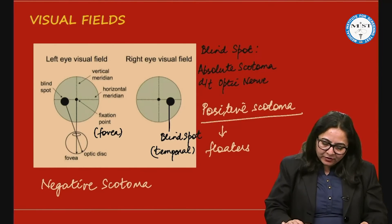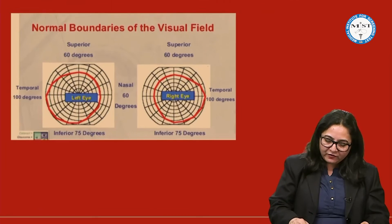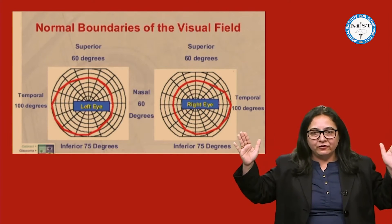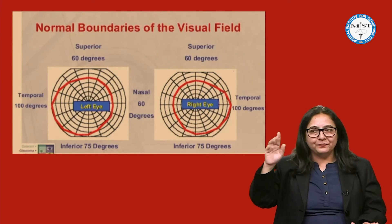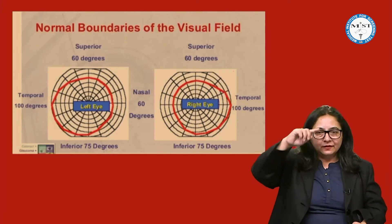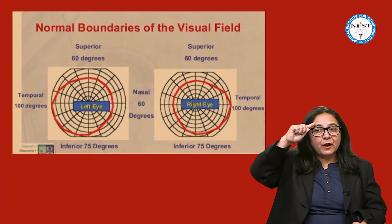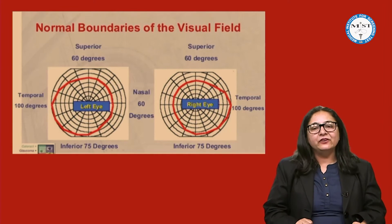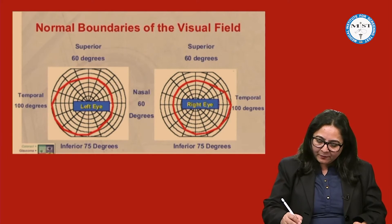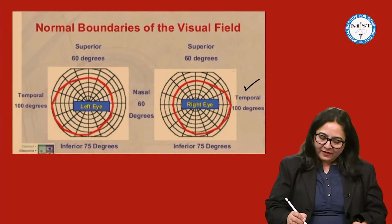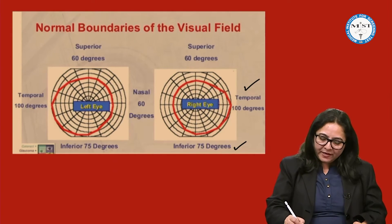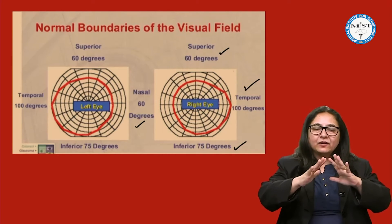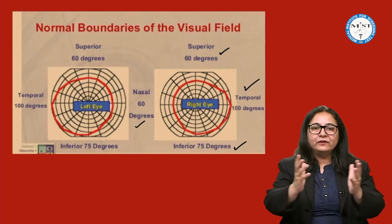Regarding the normal range and boundaries of the visual field for both eyes: the maximum extent of the visual field is temporally because there is no obstruction on that side. The superior field is bounded by the superior orbital margin, and the nasal field is bounded by the nose. The temporal visual field is largest at 100 degrees, followed by the inferior field at 75 degrees; the superior and nasal fields are almost the same at 60 degrees each.